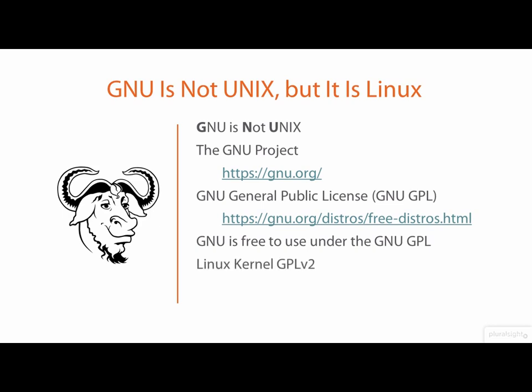The Linux kernel itself is presently licensed under the GNU General Public License version 2. Because both GNU and Linux are free software under the GPL license, they are officially known as GNU Linux, but just referring to them as Linux is what most people do. If you're wondering whether you can use Linux for free in your commercial business or for-profit organization, that depends on the Linux distribution you want to use. For this course, Kali is completely free to obtain and use, even for commercial for-profit purposes.